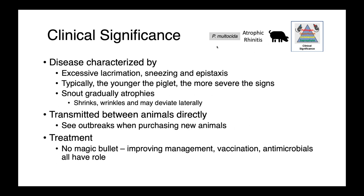The disease is characterized by excessive lacrimation, sneezing, and epistaxis. Destruction of nasal tissues and deviation of the snout can block the nasolacrimal duct. Generally, the younger the animal infected, the more severe the clinical signs. The snout gradually atrophies with shrinkage, wrinkling, and possibly lateral deviation. The disease transmits directly between animals, and outbreaks often occur when new animals are purchased. There is no magic bullet for treatment; improving management, vaccination for concurrent infections, and antimicrobials all have a role. However, pathological changes to nasal tissues and bony structures cannot be reversed — only further progression can potentially be prevented.